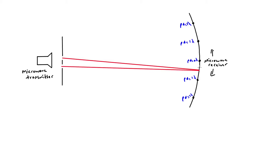Halfway between the maxima we get a minimum. The microwaves from the top slit have travelled half a wavelength further than those from the bottom slit. If they start in phase, the microwaves from the top slit travelling half a wavelength further puts them in antiphase with the microwaves from the bottom slit. A wave crest overlaps with a wave trough, they cancel out - destructive interference - and a minimum is produced.